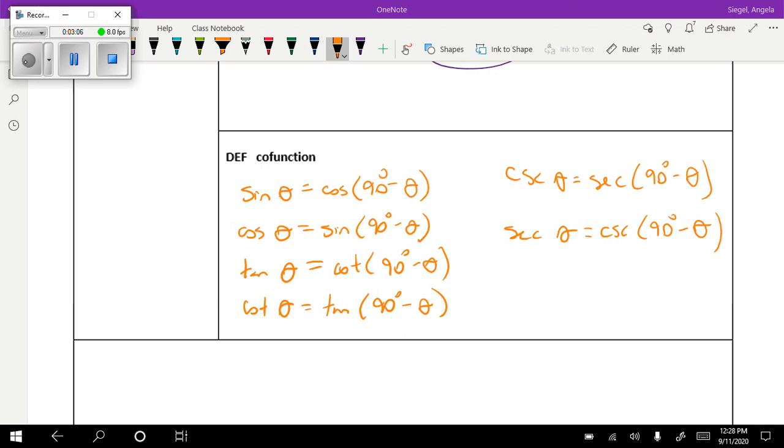So I wrote these down for you, and go ahead and just copy these down. What this means is I'm going to use this one for example. I think it's better if I give you an example with numbers. It probably makes more sense. So if I have the sine of 30 degrees, think about your unit circle, the sine of 30 degrees is actually equal to the cosine of 60 degrees.